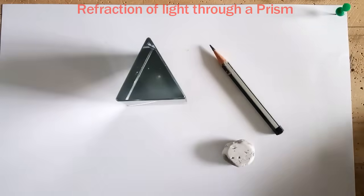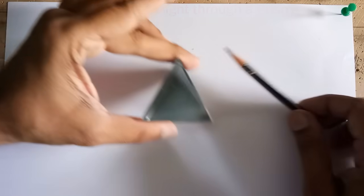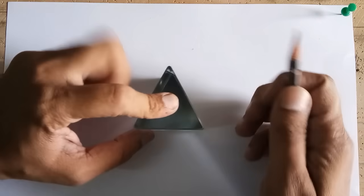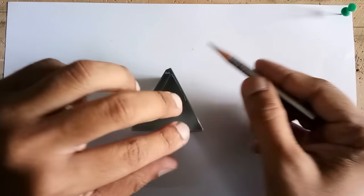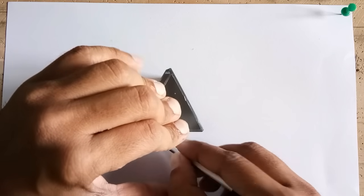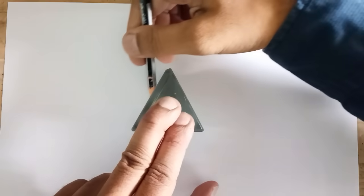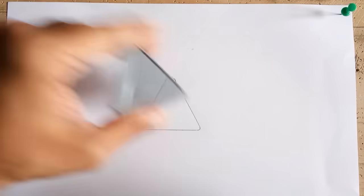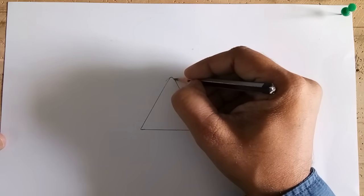Now these softboard pins put it aside, the rest four softboard pins you would be requiring. Now I am going to put this prism over here and then I am going to mark the outlines. Okay, so here we have made the outline.